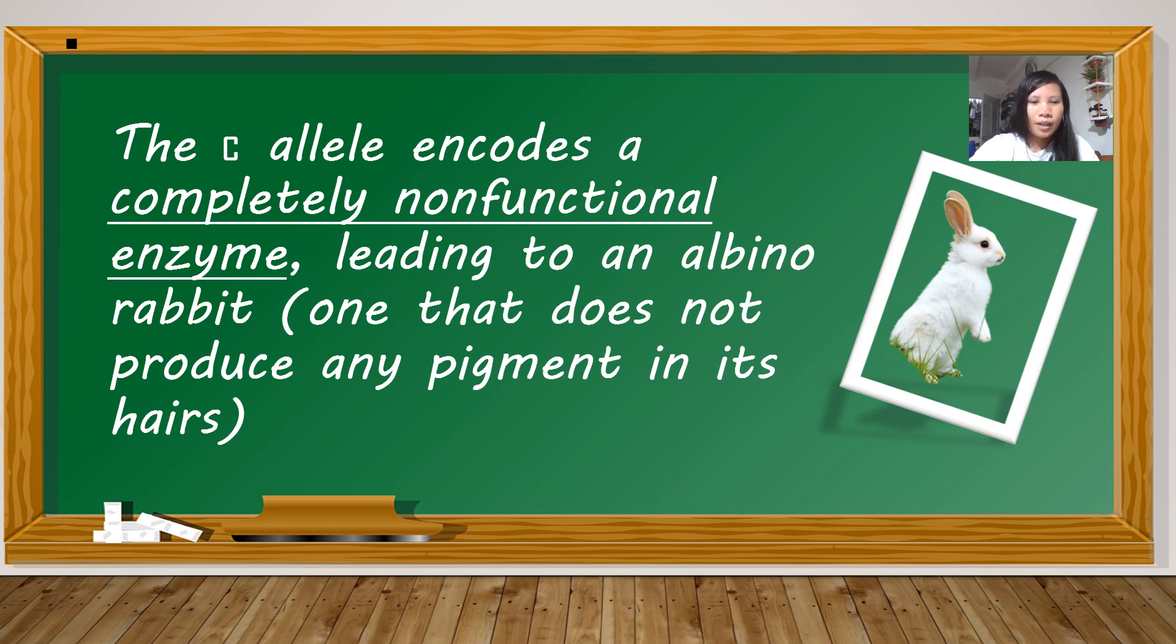The small letter c for the albino allele encodes a completely non-functional enzyme leading to an albino rabbit, one that does not produce any pigment in its hairs.